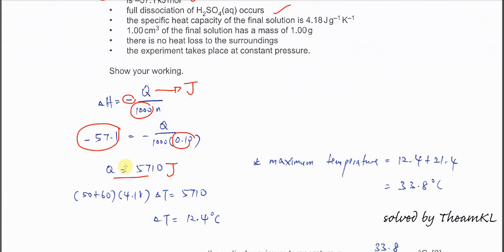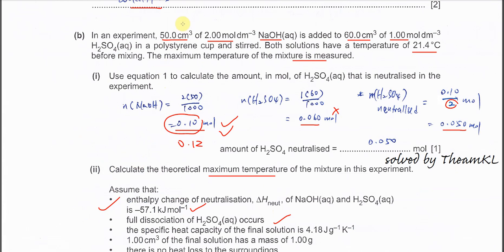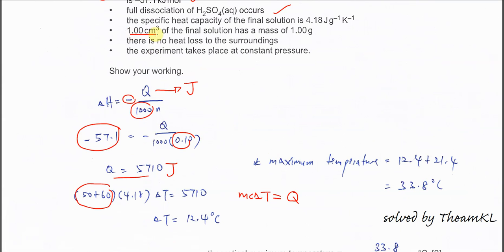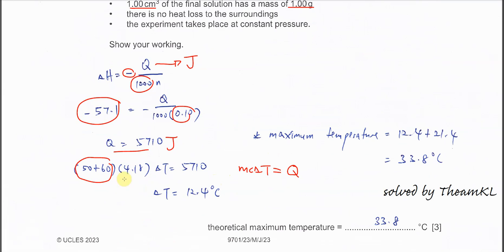Once you find this joules, this Q, then you can use the mc∆T. mc∆T equal to the Q. The mass, remember because it's two solutions added together, 50 plus 60, so the total volume is 110, means 110 grams as well. Because the density of water is 1 cm³ = 1 gram. Times the specific heat capacity of water times delta T. The delta T you should get 12.4°C. So maximum temperature is 12.4 plus 21.4. You get 33.8°C.